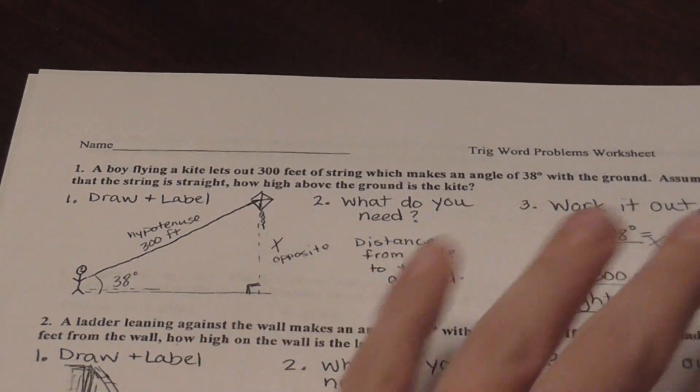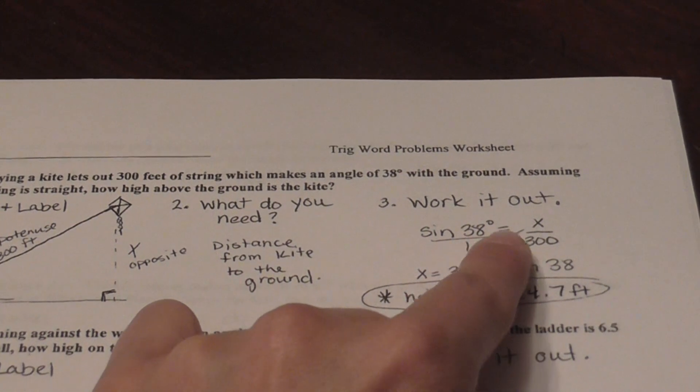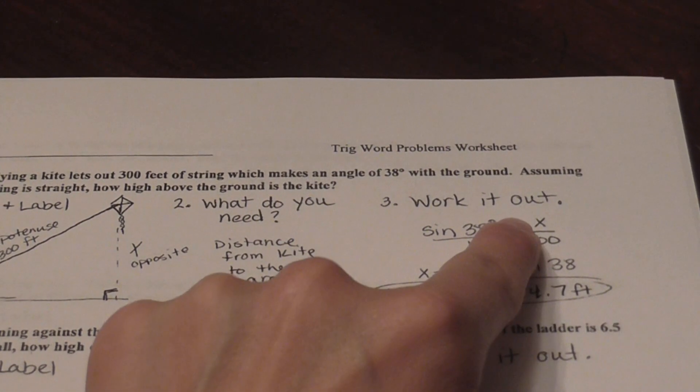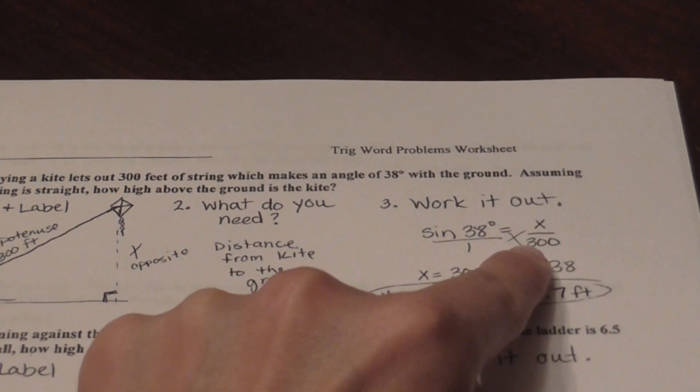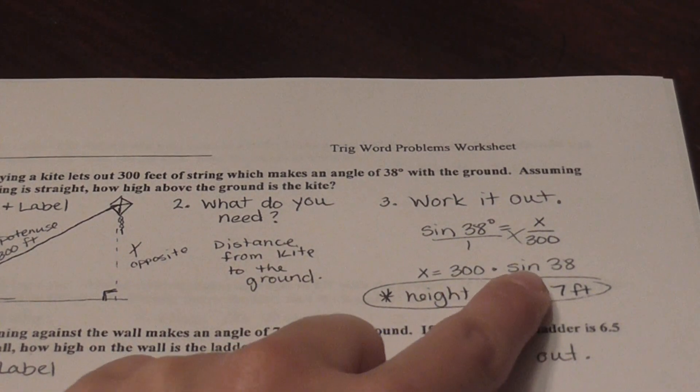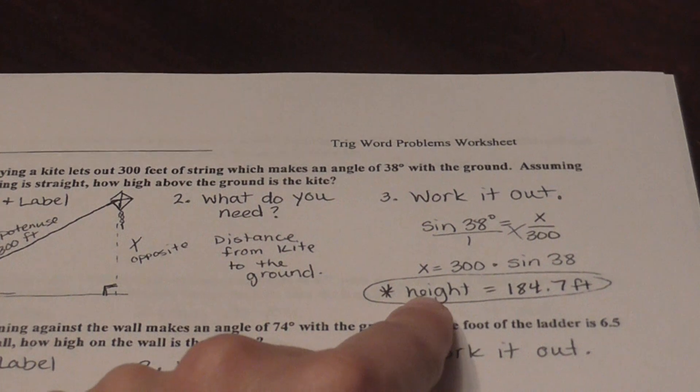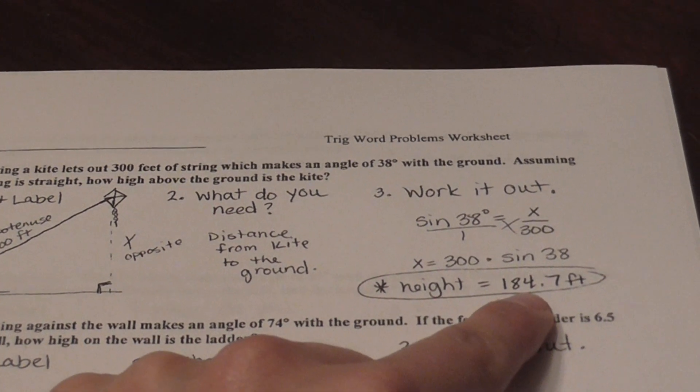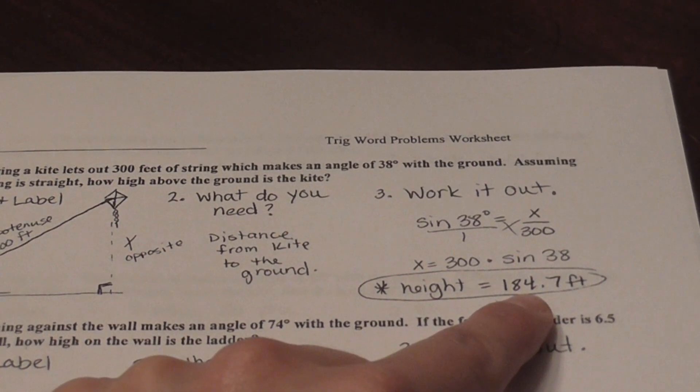So the sine of my angle equals the opposite over hypotenuse. To get rid of the three, I'm going to multiply times sine of 38. And the height of that kite is approximately 184.7 feet.